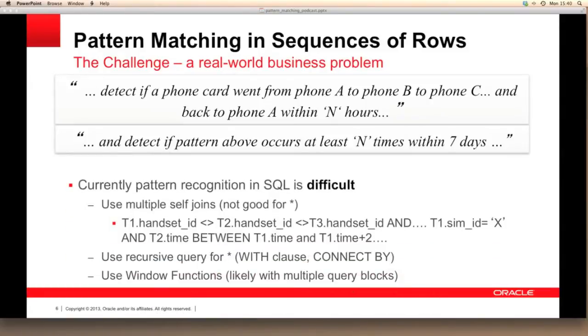To search for this type of pattern, developers have typically used multiple self joins along with connect by, with clauses, and window functions, but this makes the SQL quite complicated. Is there a better, simpler way than using self joins with connect by and window functions? What do we need to help us search for these types of patterns?